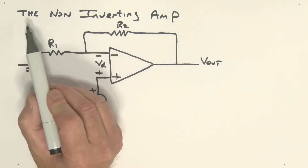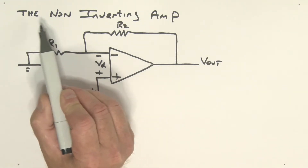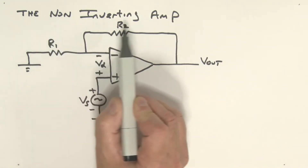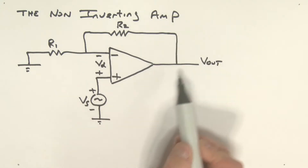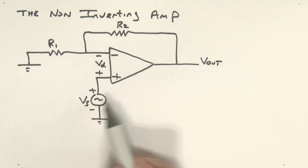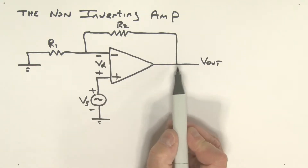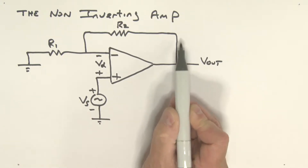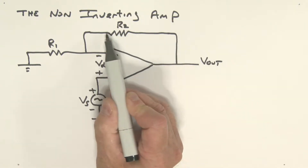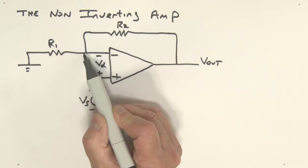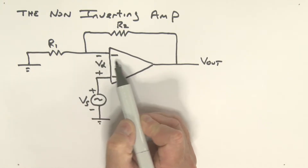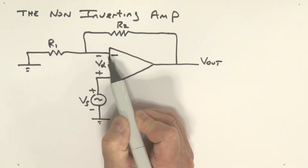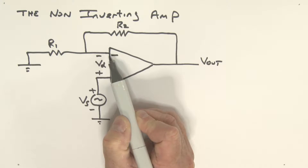What I want to do today is talk about the non-inverting amplifier. This is a closed-loop configuration. You'll notice that we have a connection from the output through resistor R2, and it is connected back to the inverting input. This is a negative feedback connection.